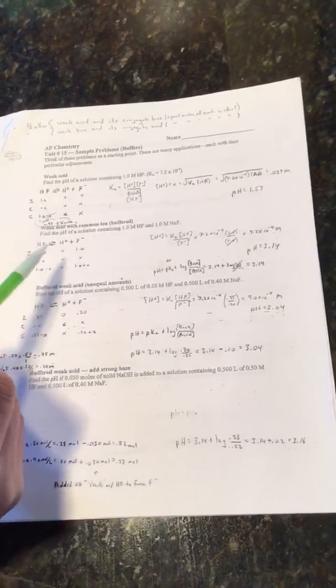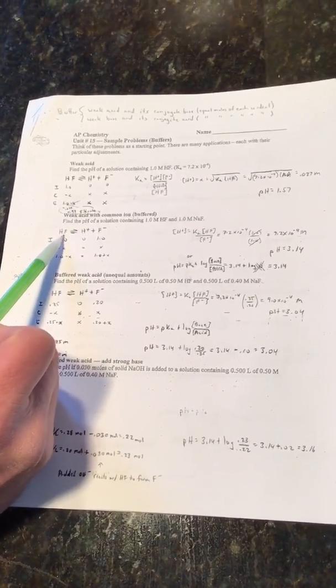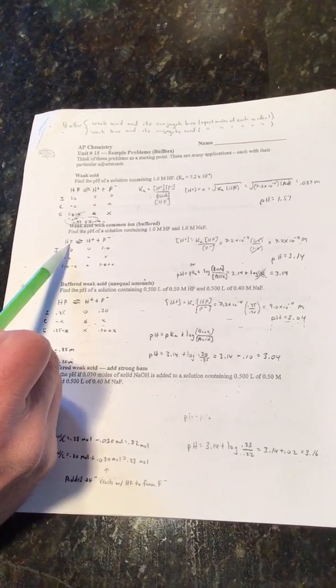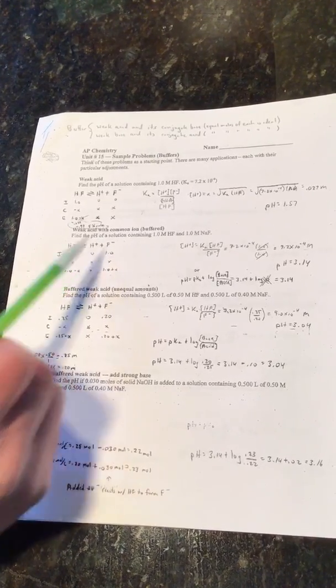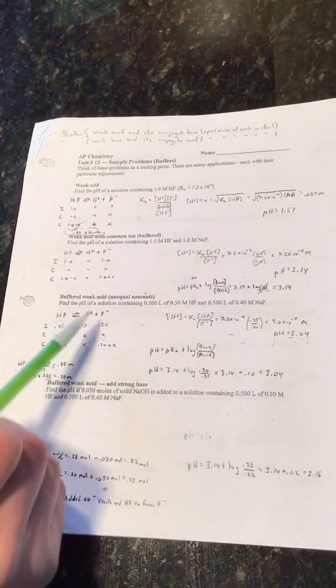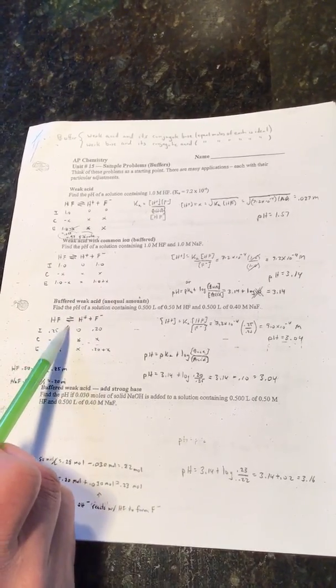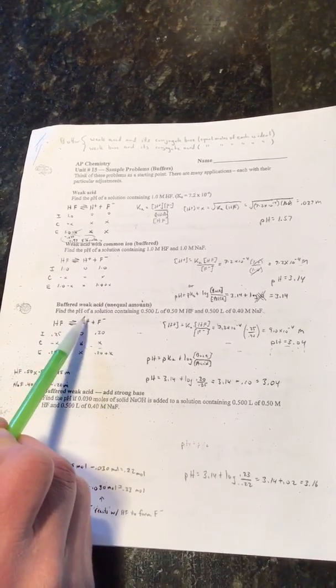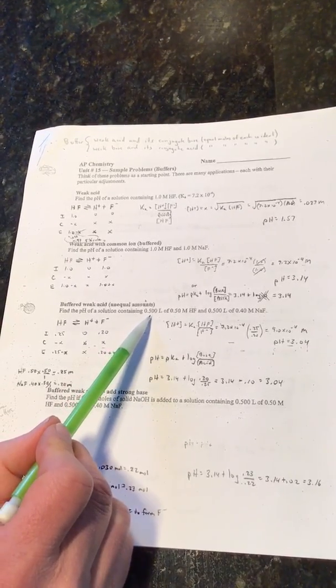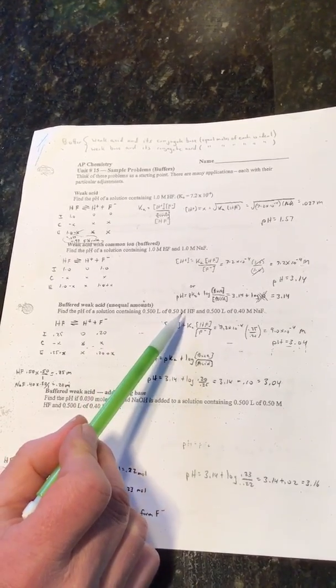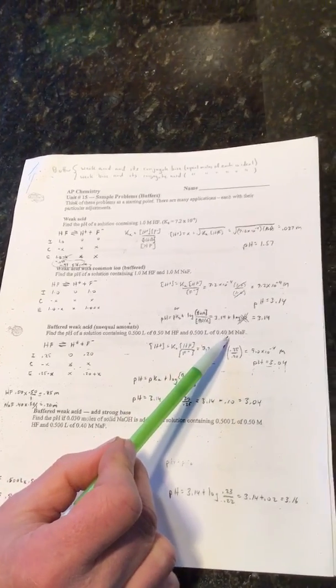Okay, this is really a buffer solution. It's HF and that's the conjugate acid. F- is the base. There's equal amounts. What if you didn't have equal amounts of HF and F-? How would that work? Here's an example.